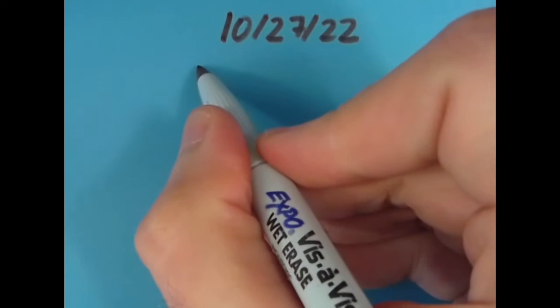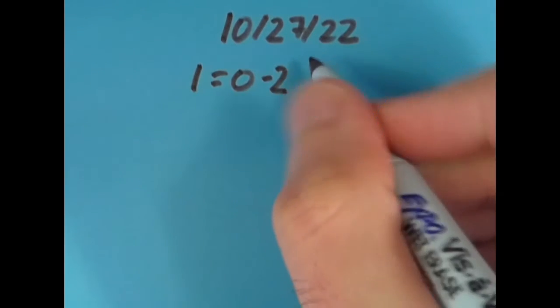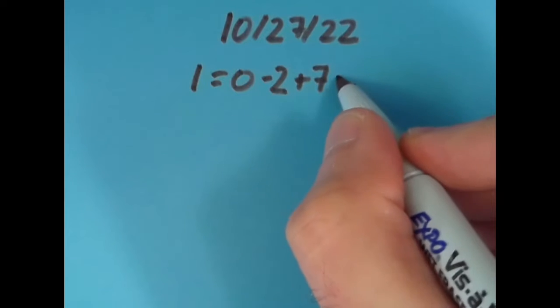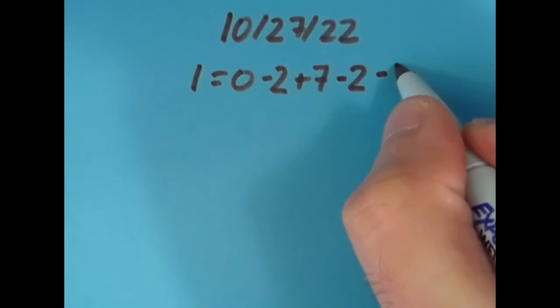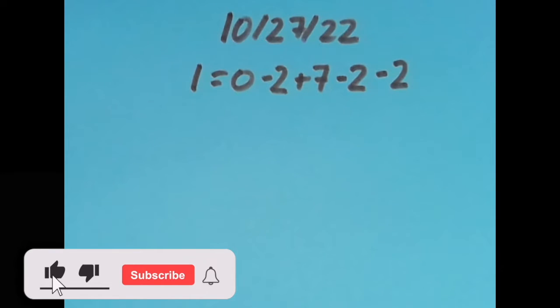Hello, today is October 27th, 2022, or 10/27/22, and what I'd like to do today is make an equation out of the digits in today's date, keeping those digits in order. What I came up with is that 1 = 0 - 2, which is -2, plus 7, which is positive 5, minus 2 is positive 3, and 3 - 2 = 1.